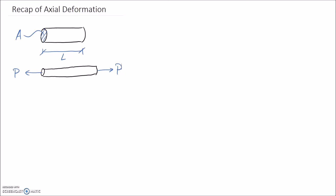In this video, I'm going to provide a recap of the information required for axial deformation. To start off with, I've drawn a member which has a cross-sectional area of A and a length of L. This is its initial length.